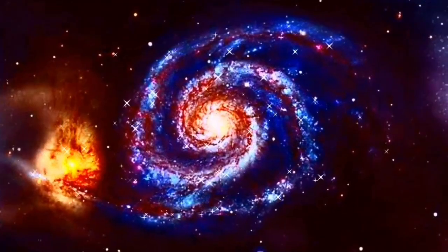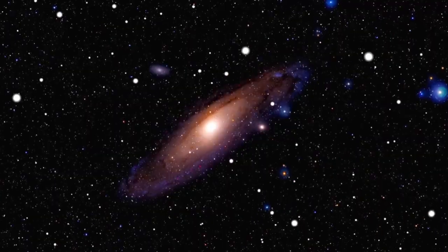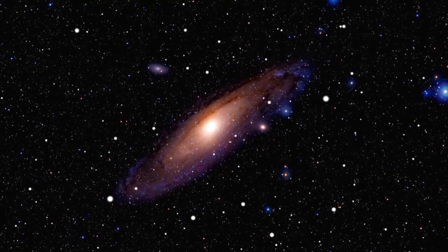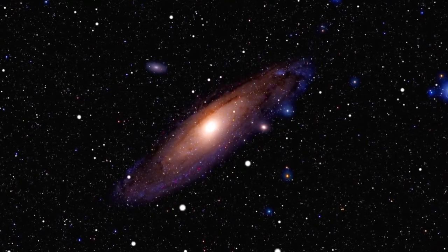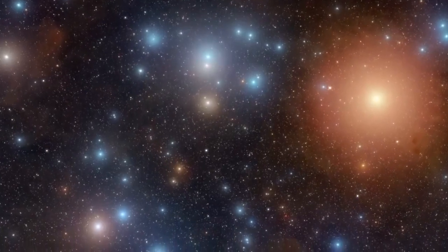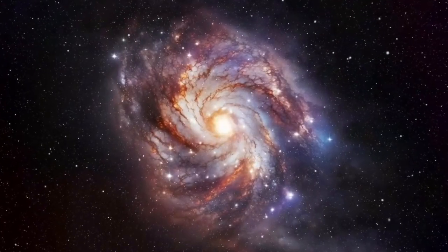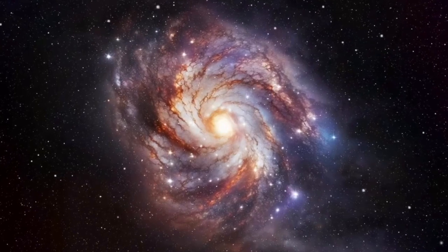Betelgeuse sheds approximately one solar mass every 10,000 years, releasing substances uniformly in all directions and generating a nebula surrounding it. This nebula spans 30 astronomical units, or 30 times the distance between Earth and the Sun, and is 250 times more massive than the star itself.